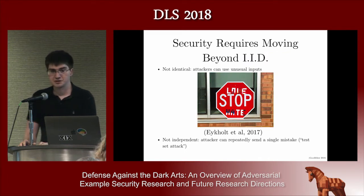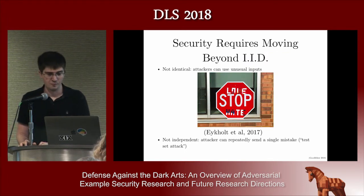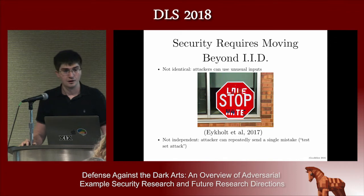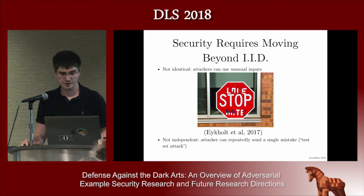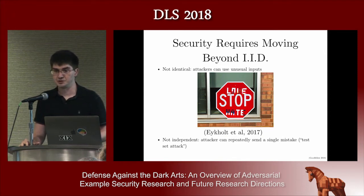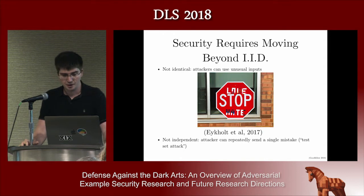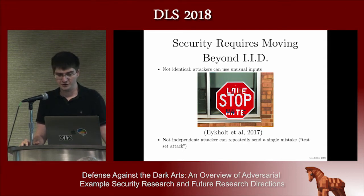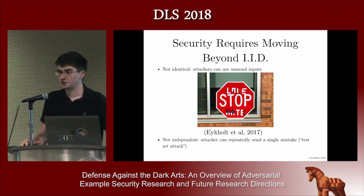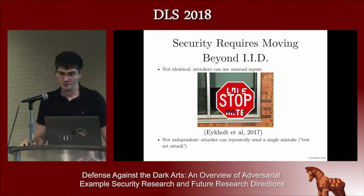For the purposes of security, we need to solve this problem of moving beyond IID data, because attackers can intentionally present inputs that are not drawn independently from each other and not from identical distributions to what the model was trained on. This example of a stop sign modified to have graffiti saying 'love stops hate' would not fool a human into ignoring the stop sign, but it does fool several machine learning models.